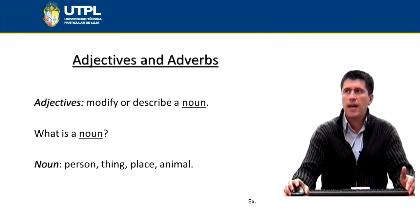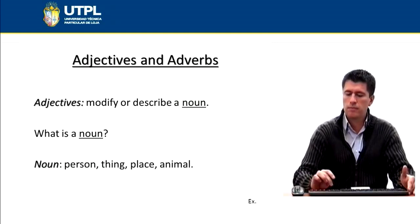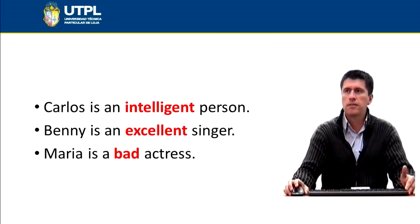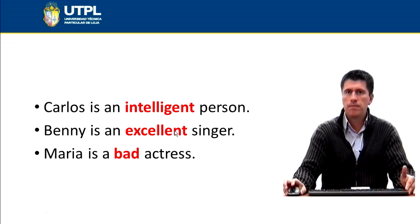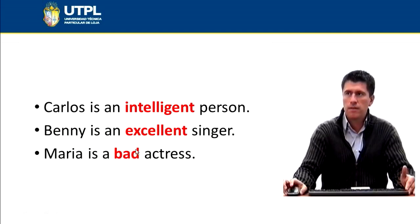Let's move on to the next topic: adjectives and adverbs. To start, you need to know what an adjective is and what an adjective does. Adjectives modify or describe a noun. A noun can be a person, a thing, a place, or an animal. Let's take a look at three examples: Carlos is an intelligent person — intelligent is the adjective describing the person. Benny is an excellent singer — excellent is the adjective describing the singer. Maria is a bad actress — bad is the adjective describing the actress. Notice that the position of the adjective is right before the noun — the adjective goes before the noun.